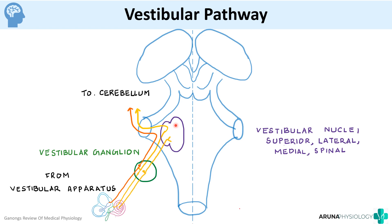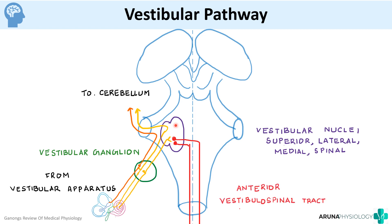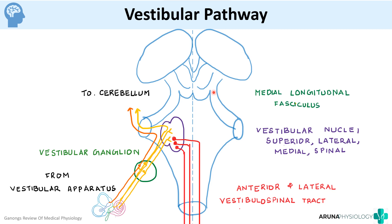From the vestibular nuclei, second-order neurons can descend to form the vestibulospinal pathway. This includes the anterior vestibulospinal pathway and the lateral vestibulospinal pathway. These tracts arise from the vestibular nuclei and project down to the spinal cord. There is another group of fibers from the vestibular apparatus that ascend via the medial longitudinal fasciculus.